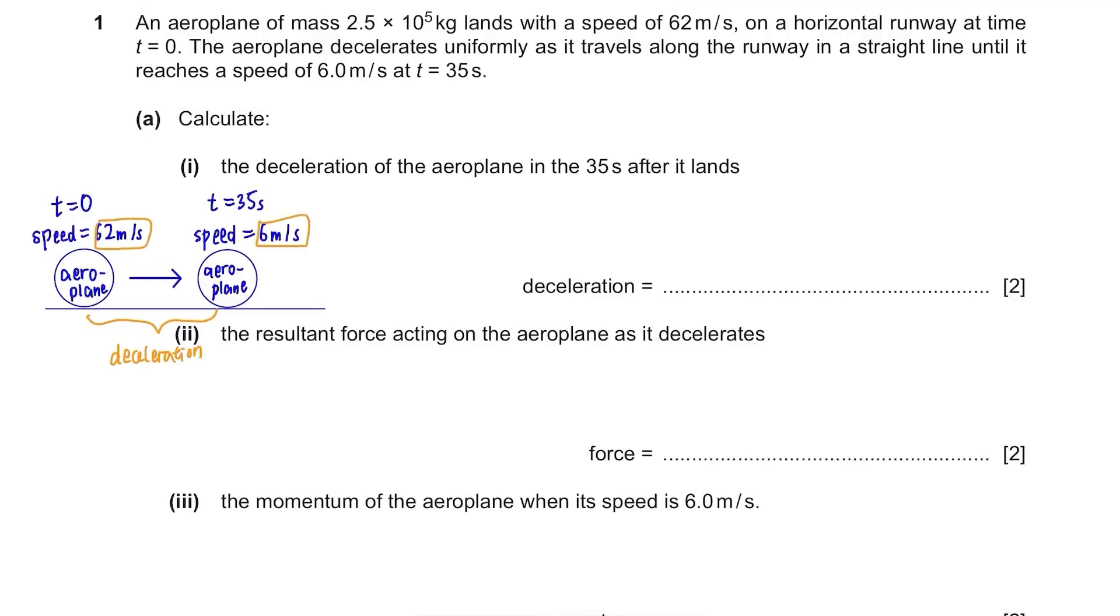The formula of deceleration is change in speed divided by change in time. So 62 minus 6 over 35 and it's 1.6 m per second square. Always write the unit.